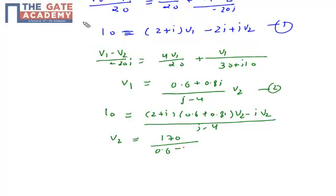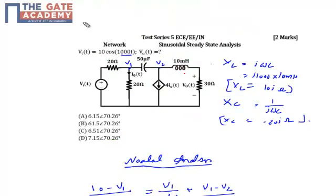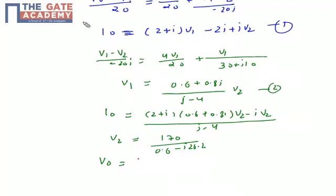Clearly my v0 is a part of v2. It's a current RL network, so my v0 will be equal to r times v2 upon r plus XL. Simple current divider in this path, so let's apply the current divider. So my v0 will be equal to 30 upon 30 plus j10 times v2, which will be equal to 3 upon 3 plus j times 170 upon 0.6 minus j 26.2.